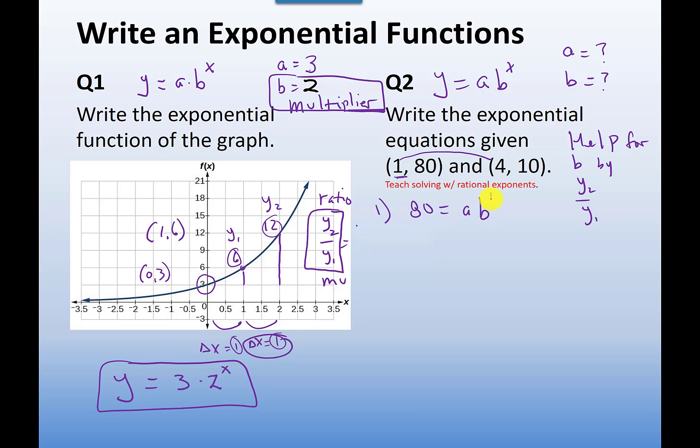So I'm going to start out by making equations and plugging these in. 80 is the y, a I don't know yet, b to the one power. So I have one equation with two unknowns but here's another one. I'm going to plug in the second point: 10 equals ab to the four power. Now I have two equations with two unknowns and technically this is solvable.